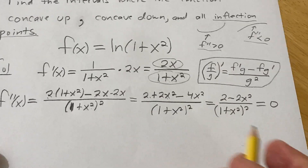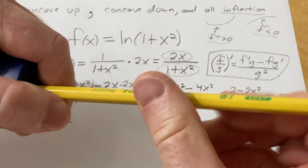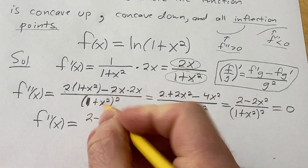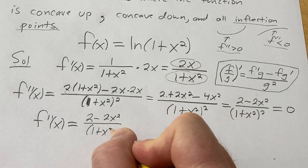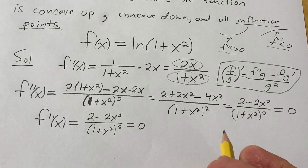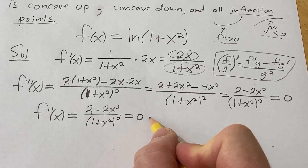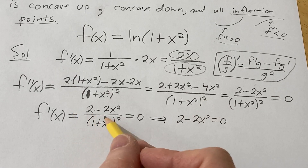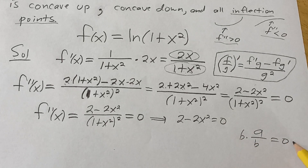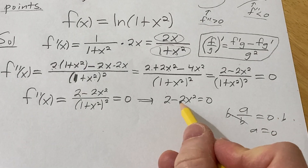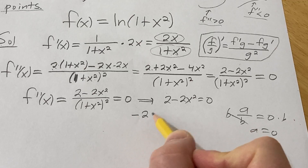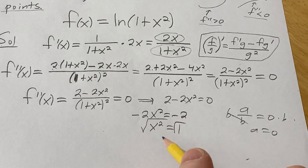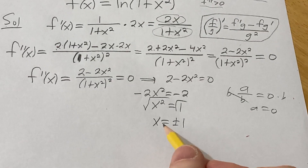I'm going to set this equal to zero. We have 2 minus 2x squared over 1 plus x squared squared equals zero. This is a fraction equal to zero, therefore the numerator is equal to zero. So 2 minus 2x squared equals zero. We subtract 2 to get negative 2x squared equals negative 2, divide by negative 2 to get x squared equals 1, take the square root of both sides — we get x equals plus or minus 1. So these are our points of interest. We're going to plot these on a number line.